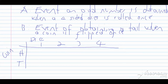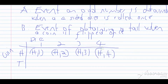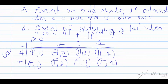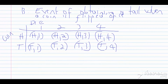We can list out all the possibilities here. We can have head with one, head with two, head with three, head with four. We can also get a tail, so we have tail with one, tail with two, tail with three, and tail with four. Notice that what happens on the coin will not affect what happens on the die.